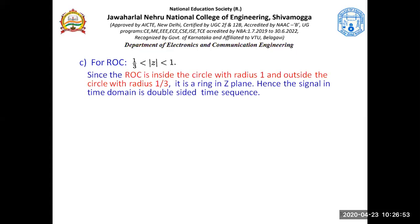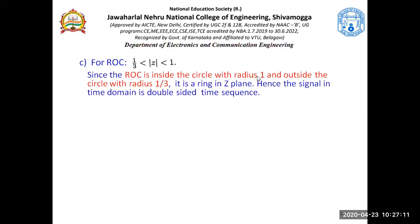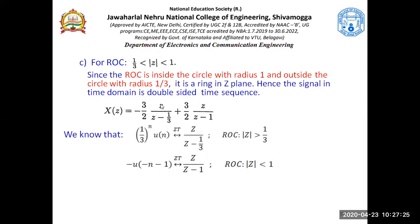We have to decide which term is associated with the positive sequence and which with the negative time sequence. Since the ROC is inside the circle with radius 1 and outside the circle with radius 1/3, it is a ring, hence the signal is double-sided. For Z/(Z - 1/3), since ROC says |Z| greater than 1/3, it is outside that circle — so this term gives a positive time sequence. For the other term, |Z| less than 1 means it is inside that circle — so that gives a negative time sequence.